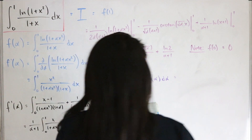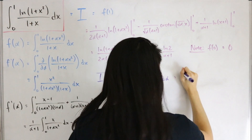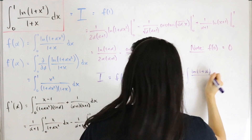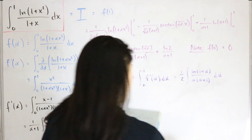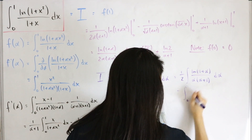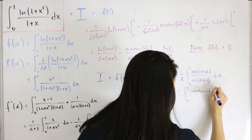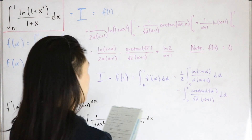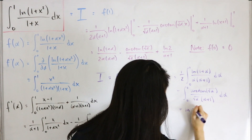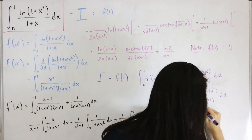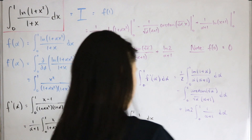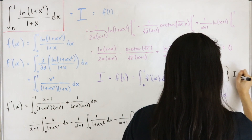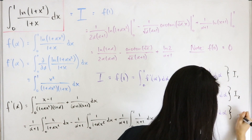Taking the integral, we have: one half times the integral from zero to one of ln(1+α)/(α(α+1)) dα, minus the integral from zero to one of arctan(√α)/(√α (α+1)) dα, plus ln(2) times the integral from zero to one of 1/(α+1) dα. We denote these as I₁, I₂, and I₃ respectively.